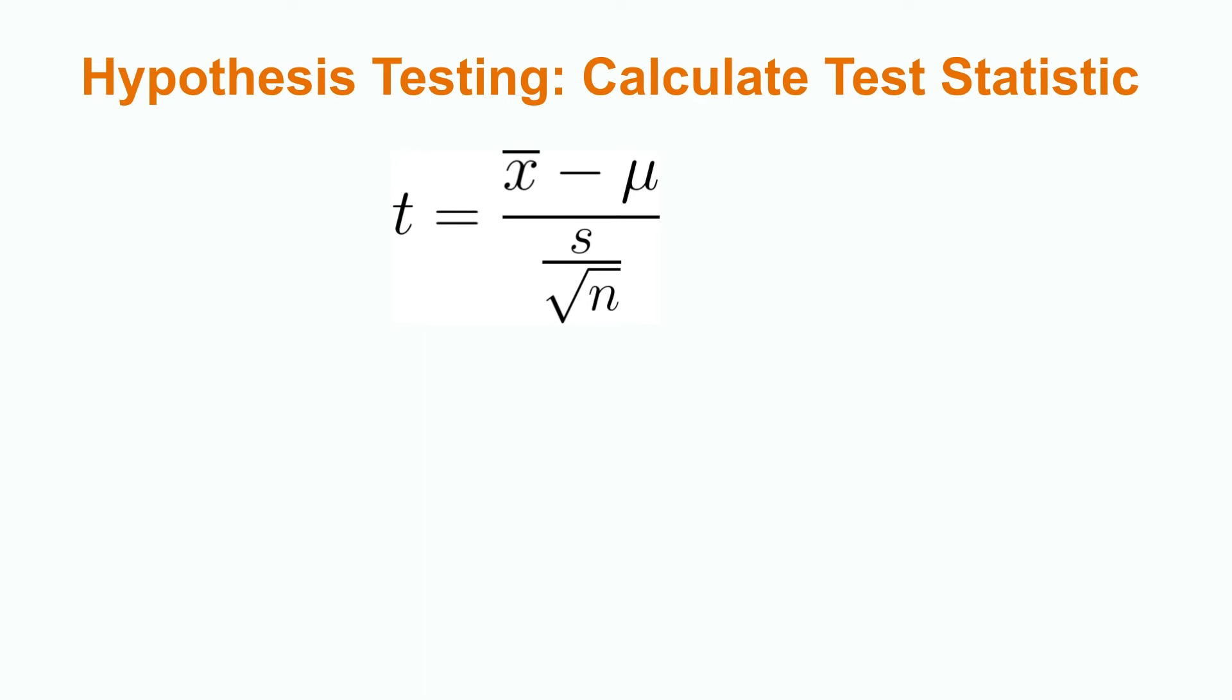It is now time to calculate our test statistic. Our test statistic for this hypothesis test is t because we do not know our population standard deviation. Using the formula t = (x̄ - μ)/(s/√n), we obtain a test statistic of 2.5.